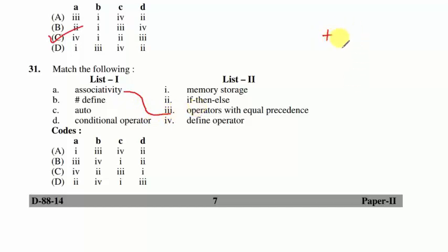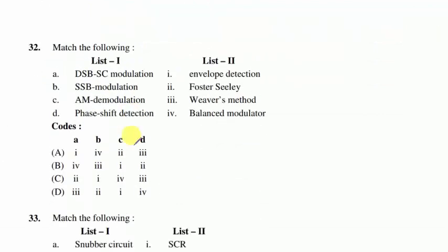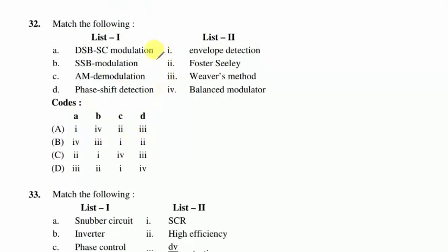Question 31: match the following. Associativity applies to operators with equal precedence (e.g., +/− have equal priority; ×/÷/% have equal priority) — left or right associativity applies. #define is the define operator. auto is for memory storage / dynamic memory allocation. Conditional operator is if-then-else. Suitable option B is correct.